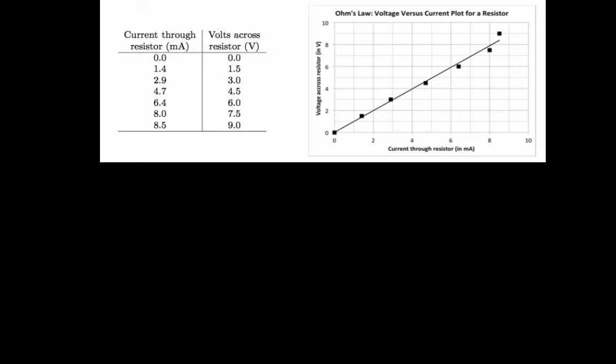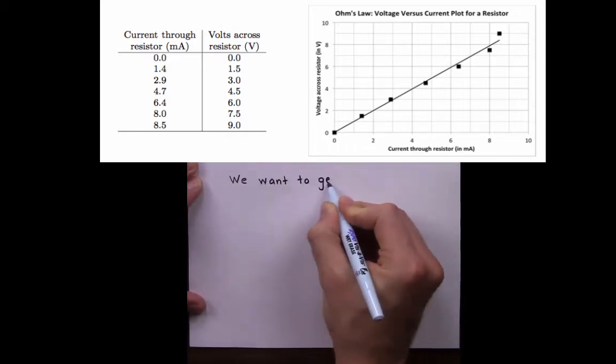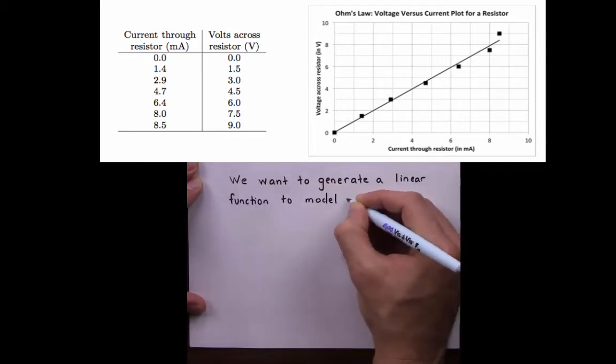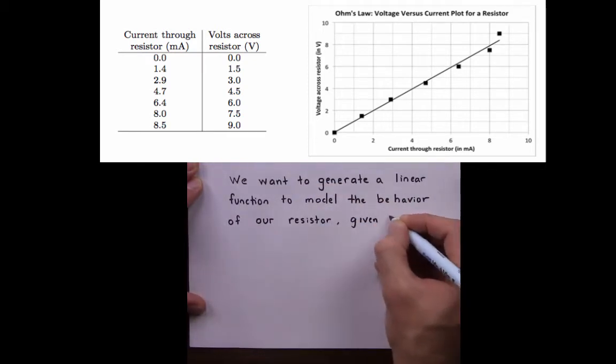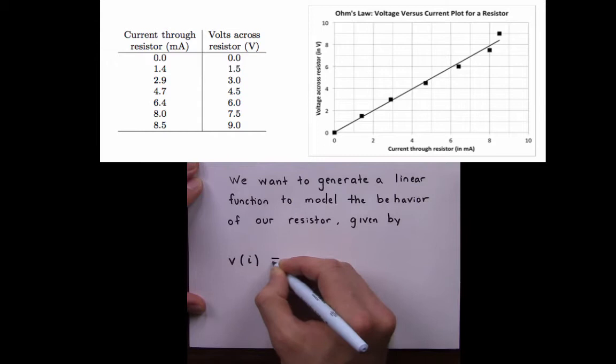In this problem, we want to find a linear model to represent the voltage and current relationship through the resistor. In other words, we want to find the equation for a line, we'll call it V of I,